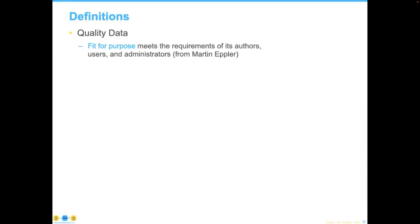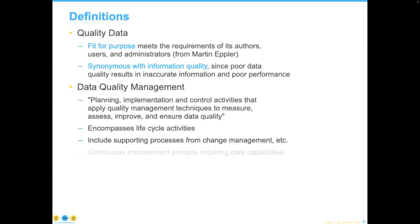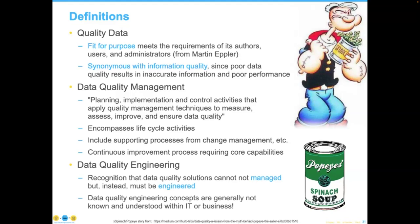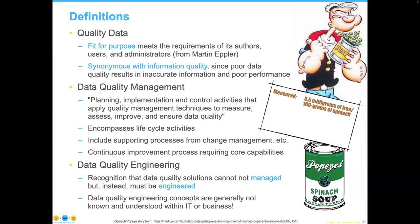Let's talk about some definitions. Quality data, thanks to Martin Epler, is data that is fit for purpose — it's synonymous with information quality. Data quality management involves life cycle activities running all the way around to give a full cycle. Data quality engineering is the idea that we need to approach this from an engineering perspective. The Popeye logo is a famous example of a data quality problem — Popeye eats his spinach and gains additional abilities, which turns out to be a data quality error: the original measured piece was 3.5 milligrams of iron per 100 grams of spinach, but it was reported at 35 milligrams. It wasn't corrected until 50 years later.